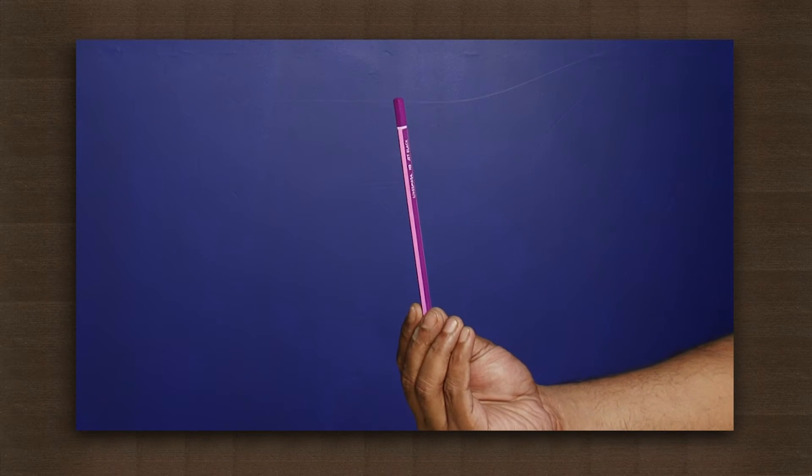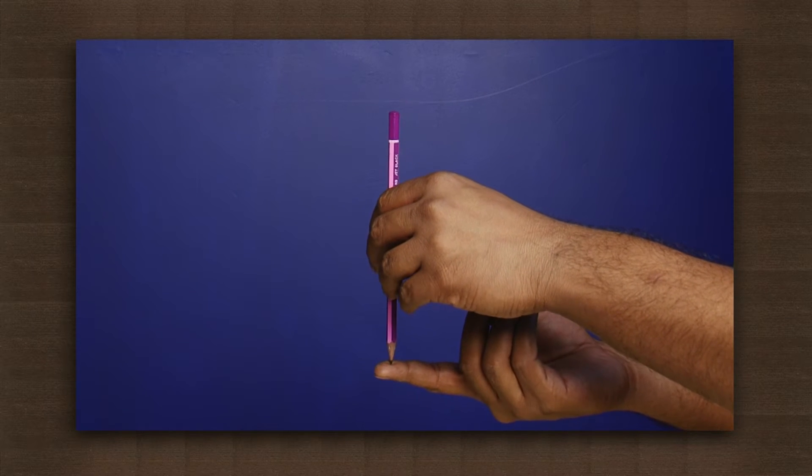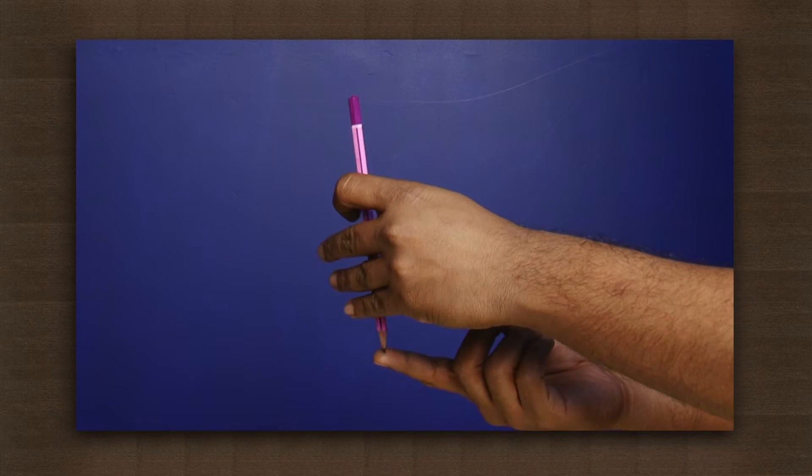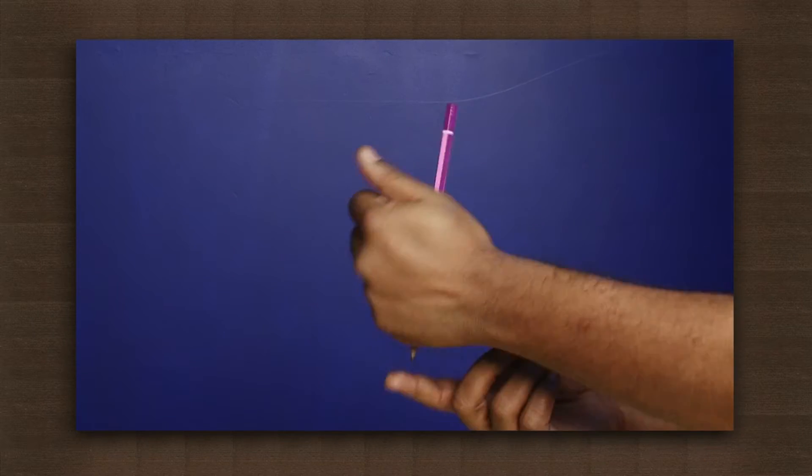Here we have a pencil. Let's try to balance it vertically on the fingertip. It falls off. It's almost impossible to balance the pencil on its tip.